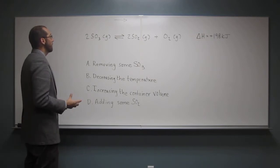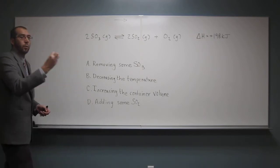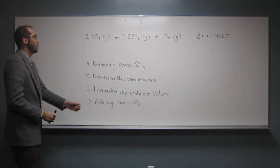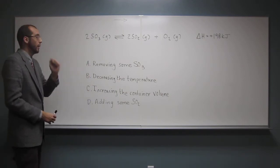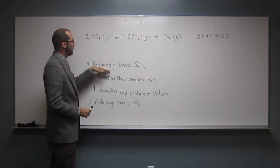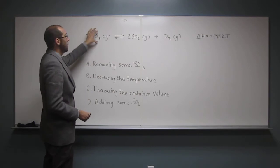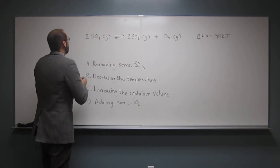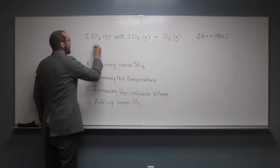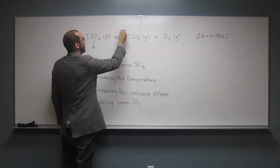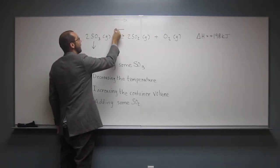So Le Chatelier's Principle, remember what happens if you remove something from the reaction? That side of the reaction, it shifts towards that way. So this one says removing some sulfur trioxide. Where is sulfur trioxide? It's here. So if we decrease the amount, that's removing it, what's going to happen to this equilibrium arrow? It's going to shift to the left.